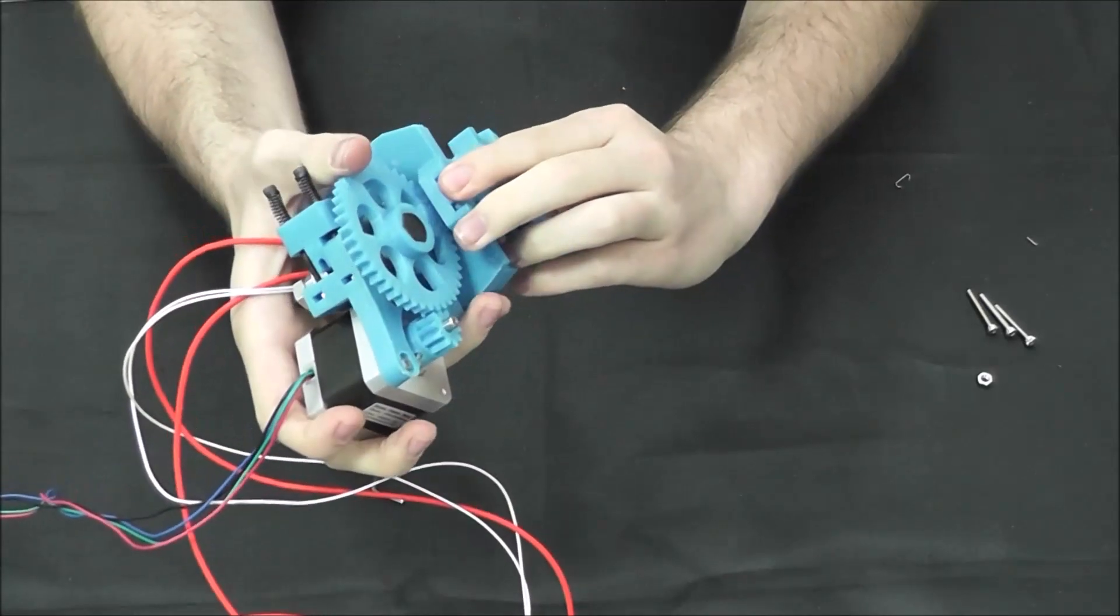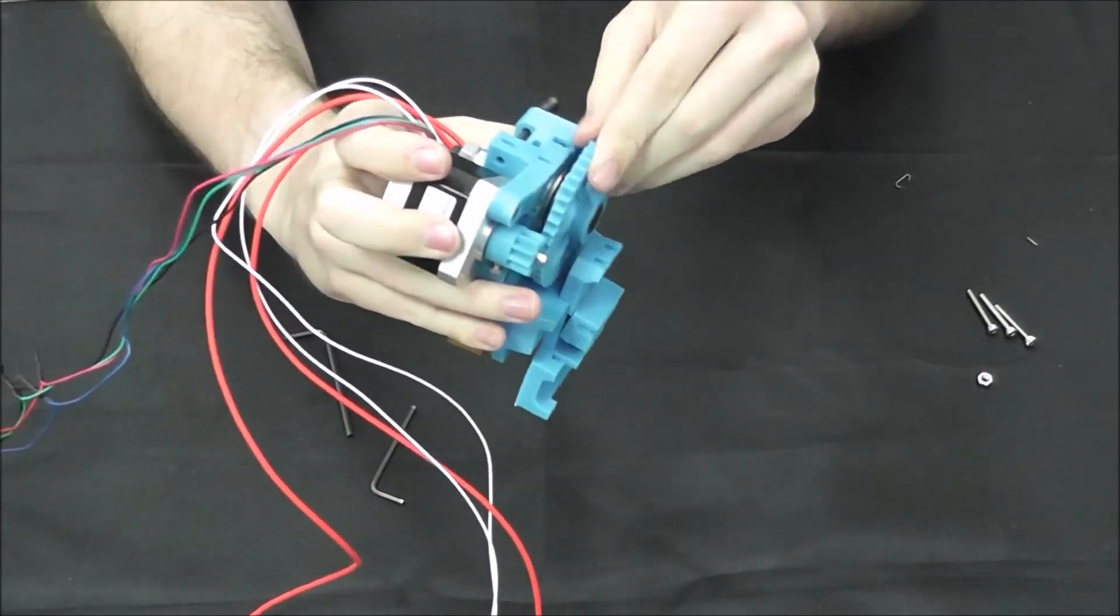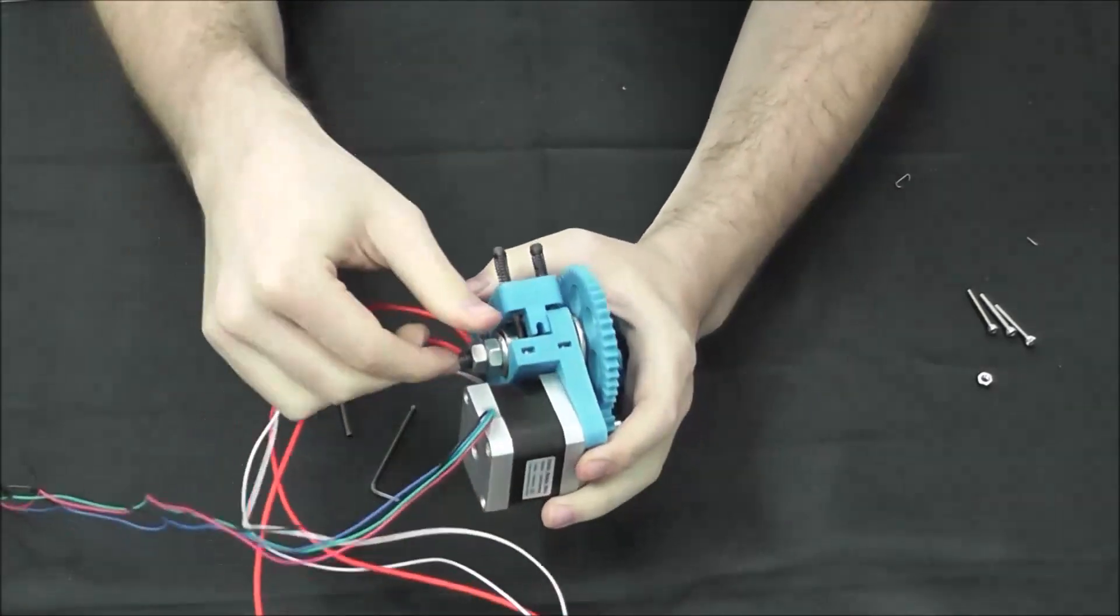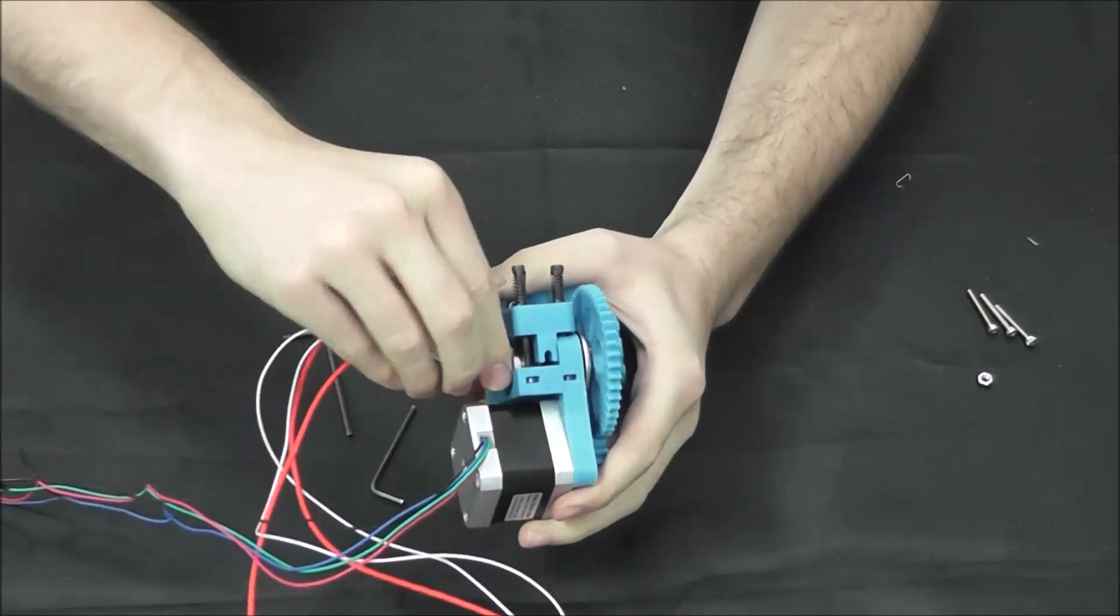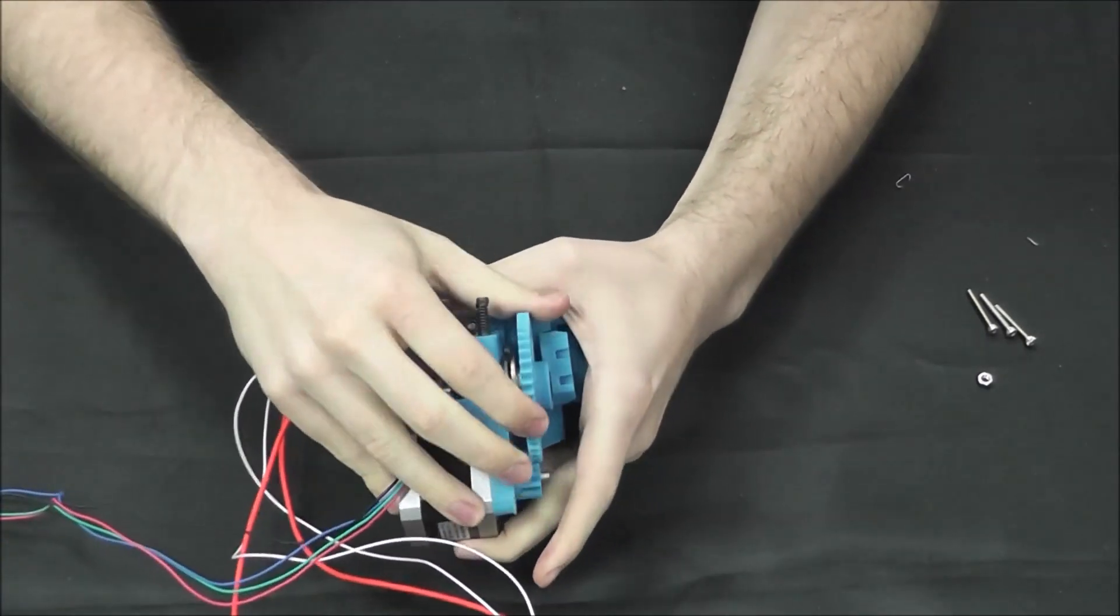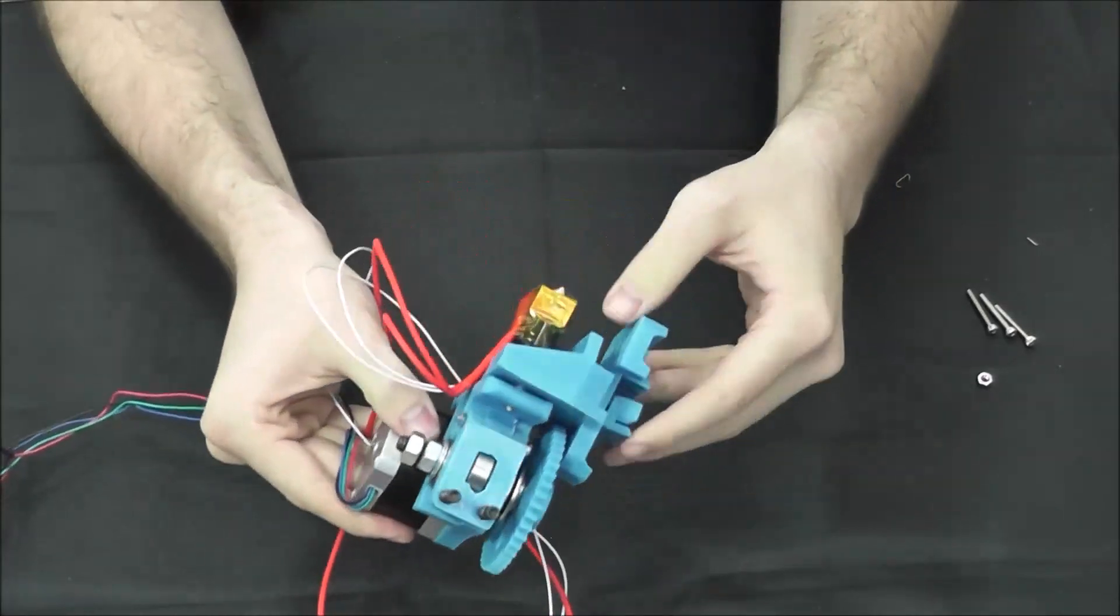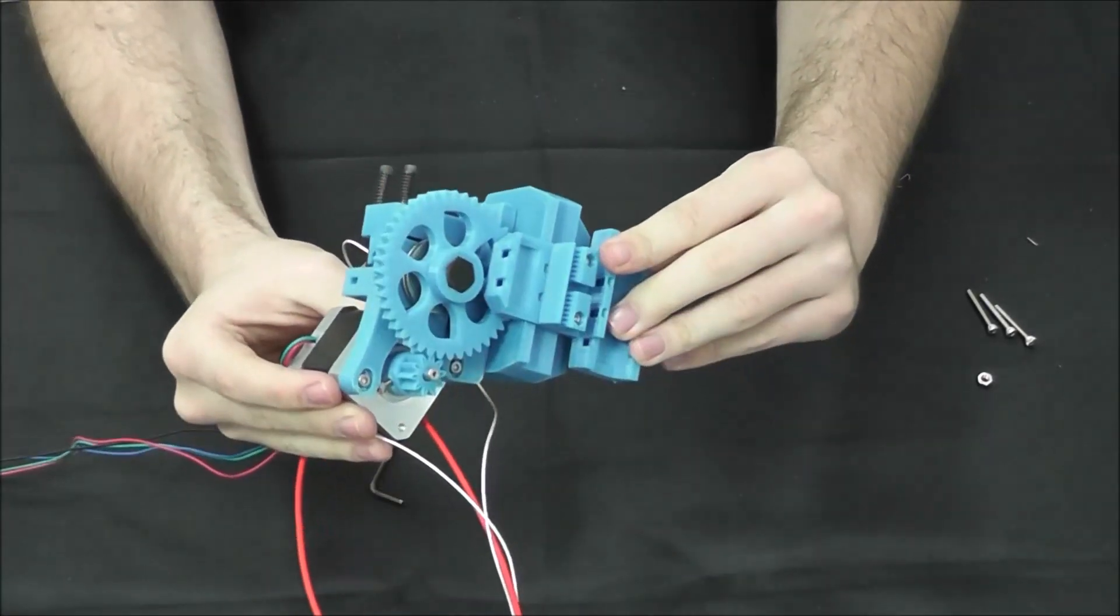Gears should turn freely, nothing should restrict them. If your M8 nuts on this side are too tight, you can loosen them up a bit so your gear can turn more freely. Otherwise, this is it. Thank you.